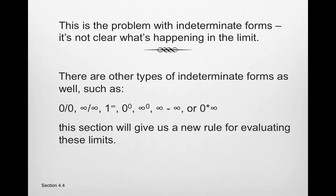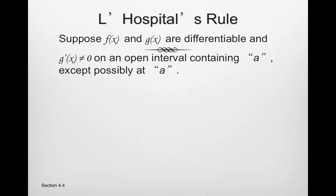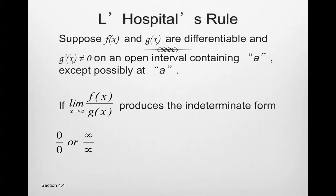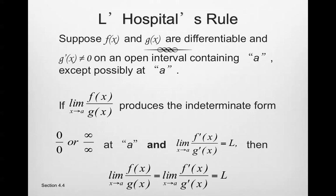This section gives us a new rule for evaluating those limits: L'Hopital's Rule. Suppose f(x) and g(x) are both differentiable, and g(x) cannot be 0 on an open interval containing a, except possibly at a. If f(x)/g(x) produces the indeterminate form 0/0 or ∞/∞ at a, and the limit of the ratio of derivatives equals L, then the limit of f(x)/g(x) equals the limit of f′(x)/g′(x), which equals our limit L.